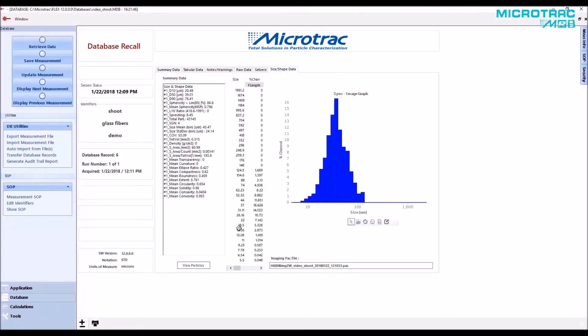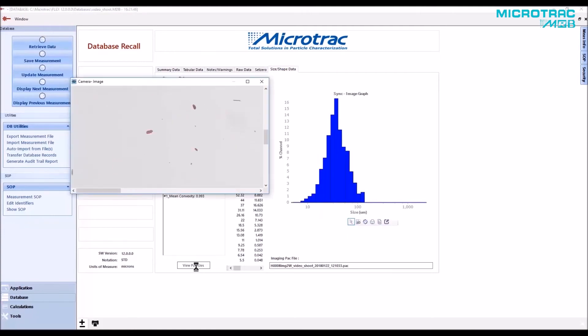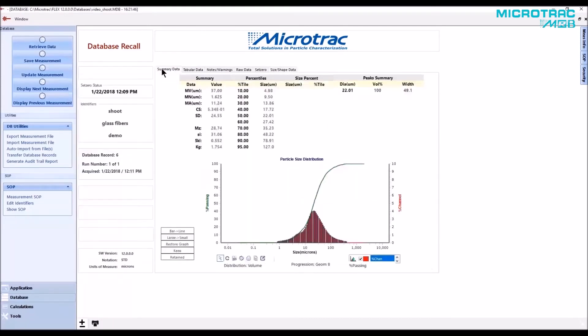Microtrack's Flex software collects data from the detector arrays and camera and applies our proprietary algorithms to generate particle size distributions and more than 30 shape parameters, all through an easy-to-use integrated graphical user interface.